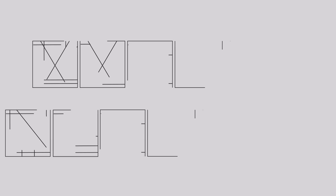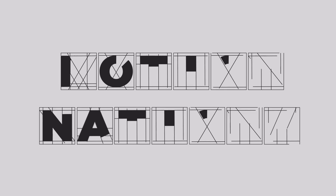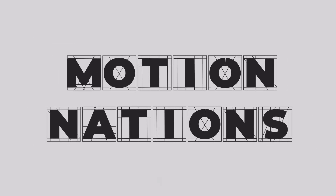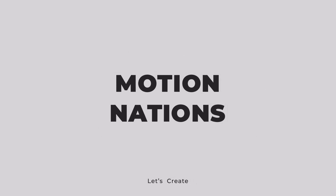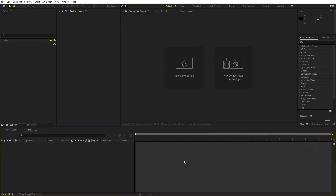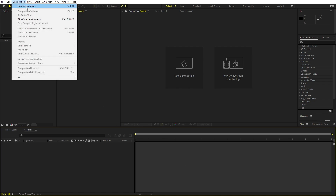This motion graphics text animation is done entirely using After Effects and it's very easy to create, so let's see how to make this.